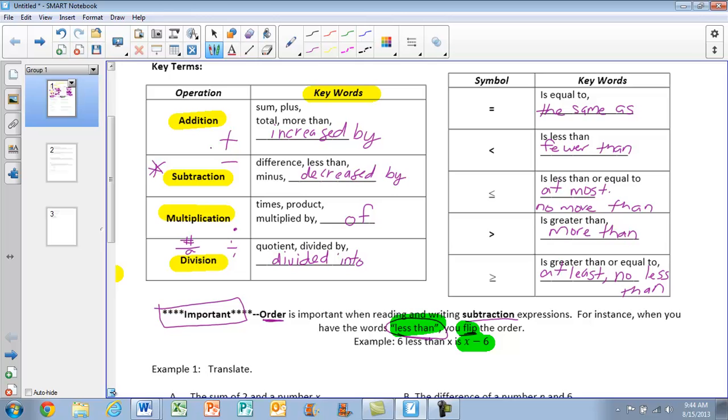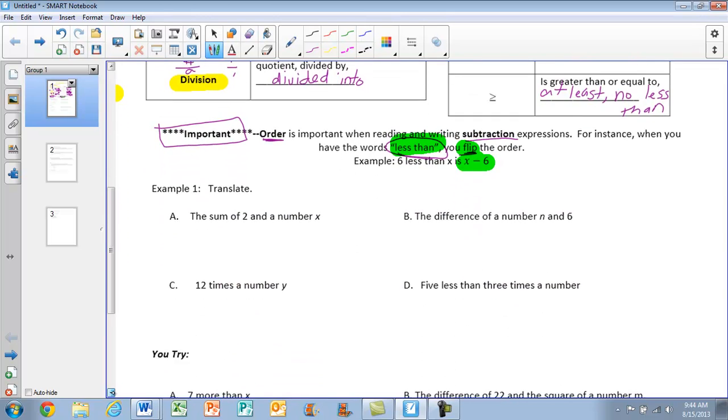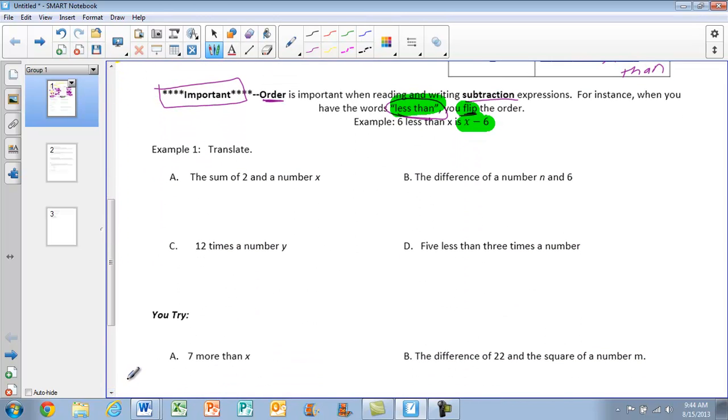So let's go down to the first example. The directions here say translate. Translate means they're asking you to read it and write the expression.